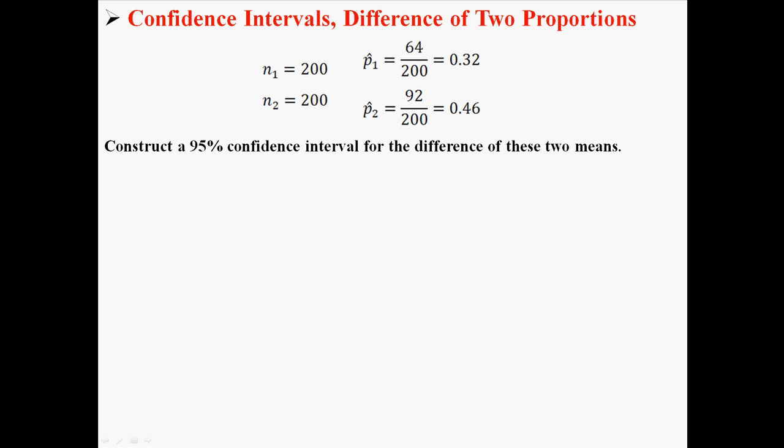For this data which I used in the last lecture, I have two sample sizes which are both 200 and I have two proportions 0.32 and 0.46. Construct a 95% confidence interval for the difference of these two means.